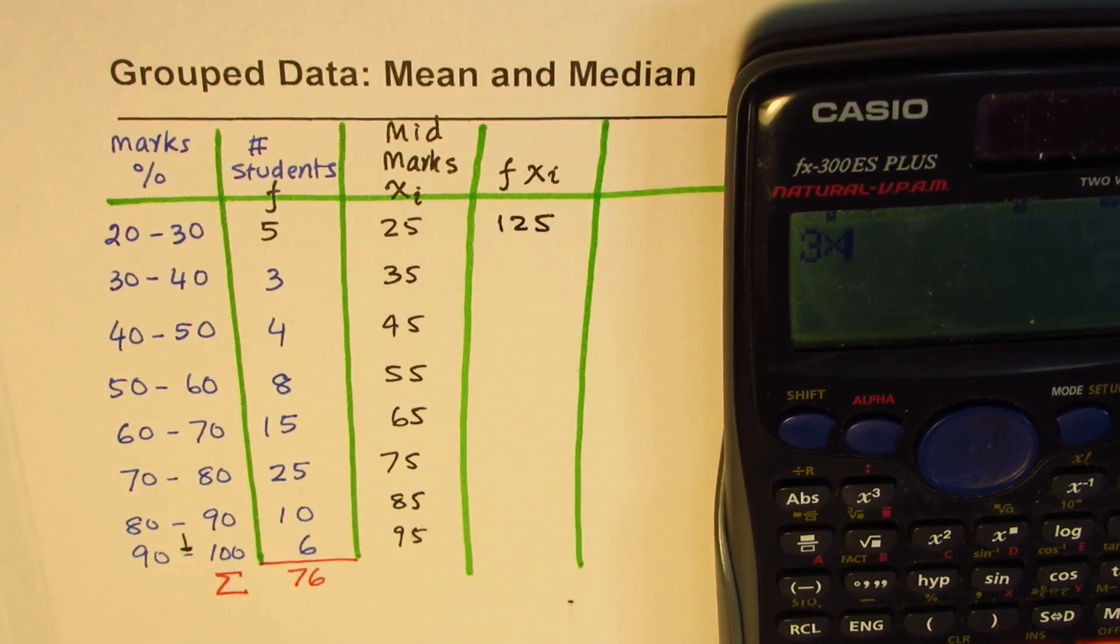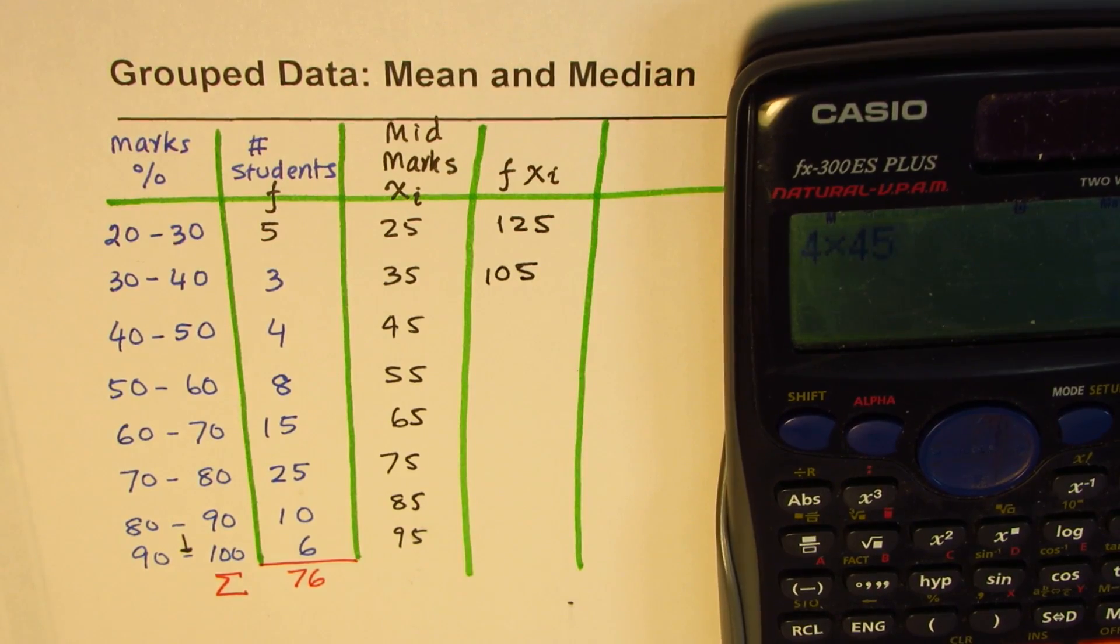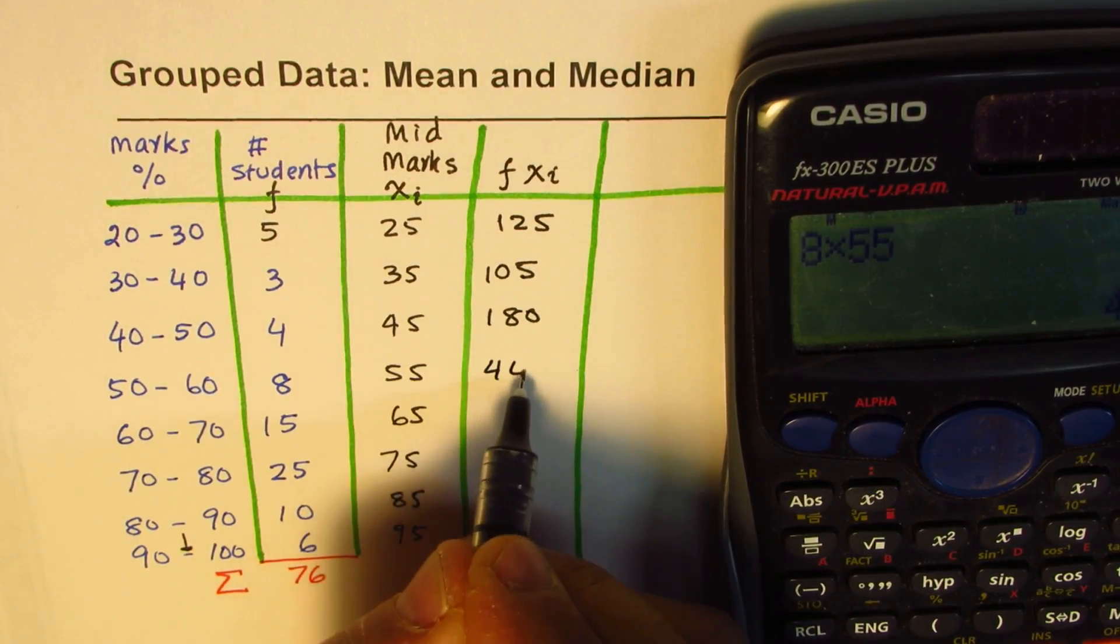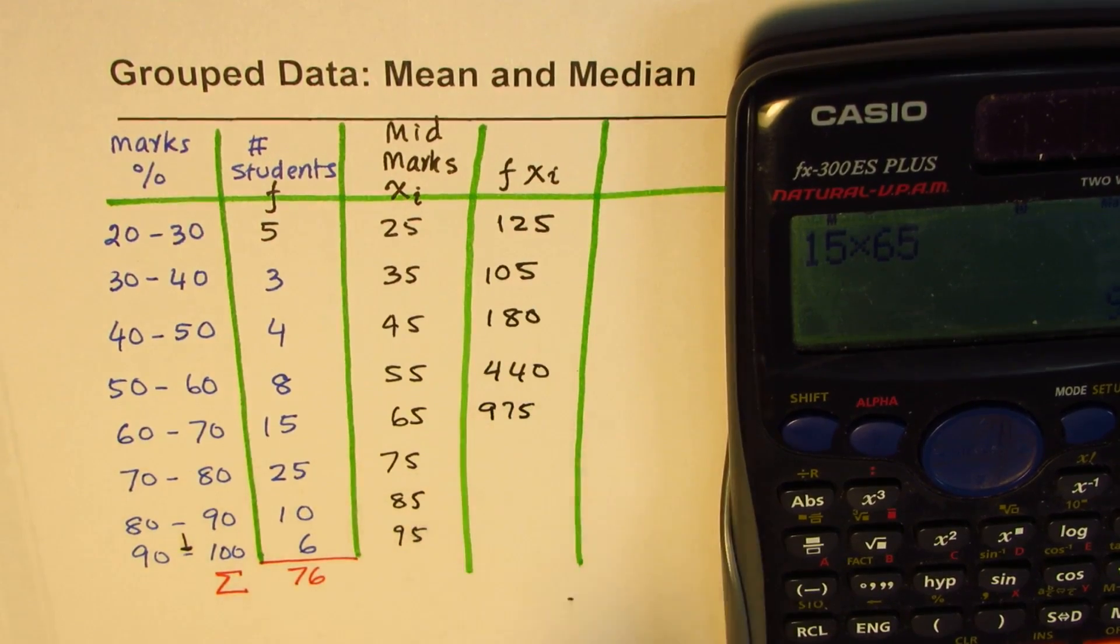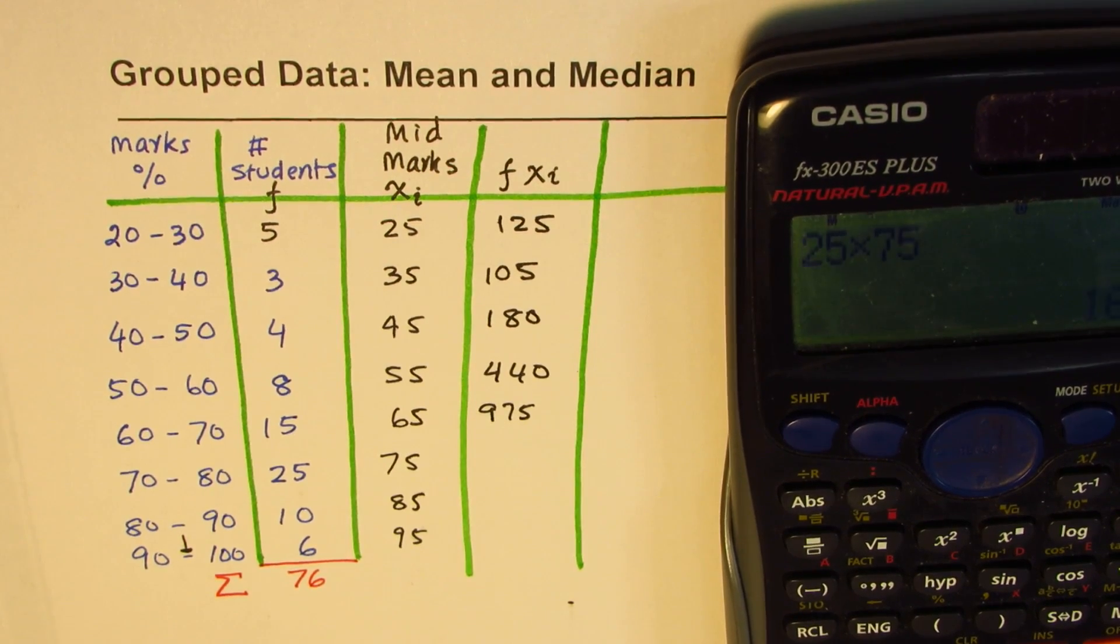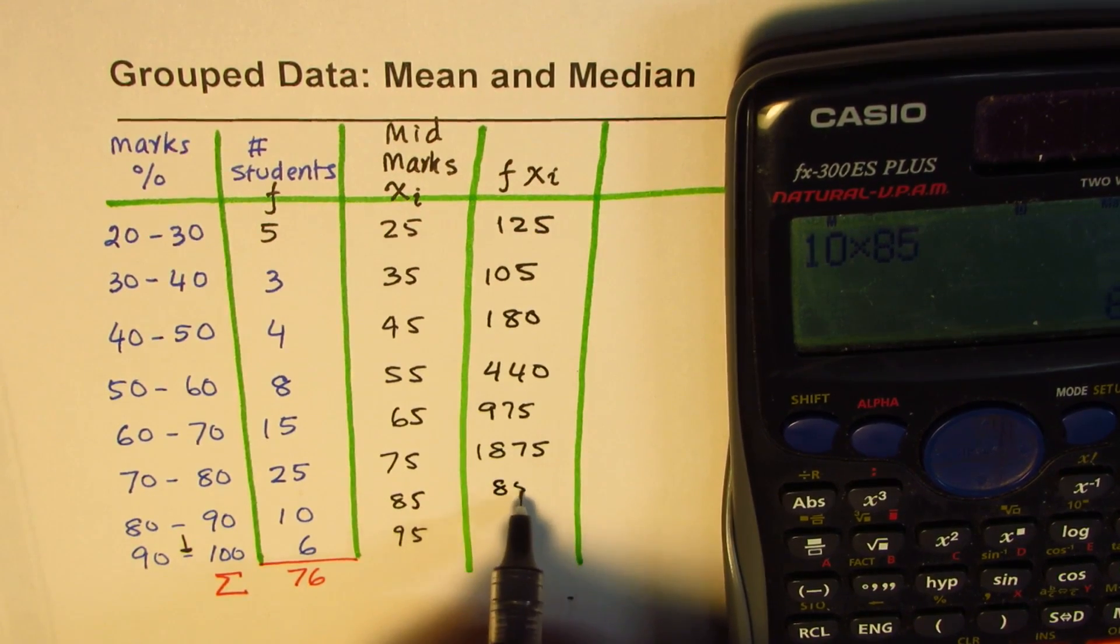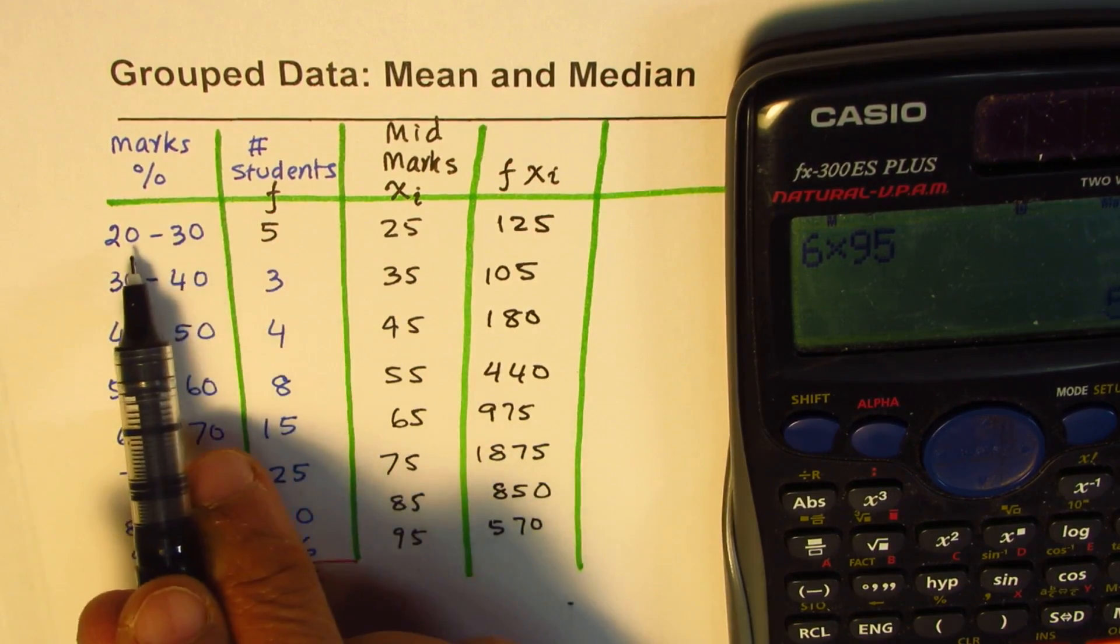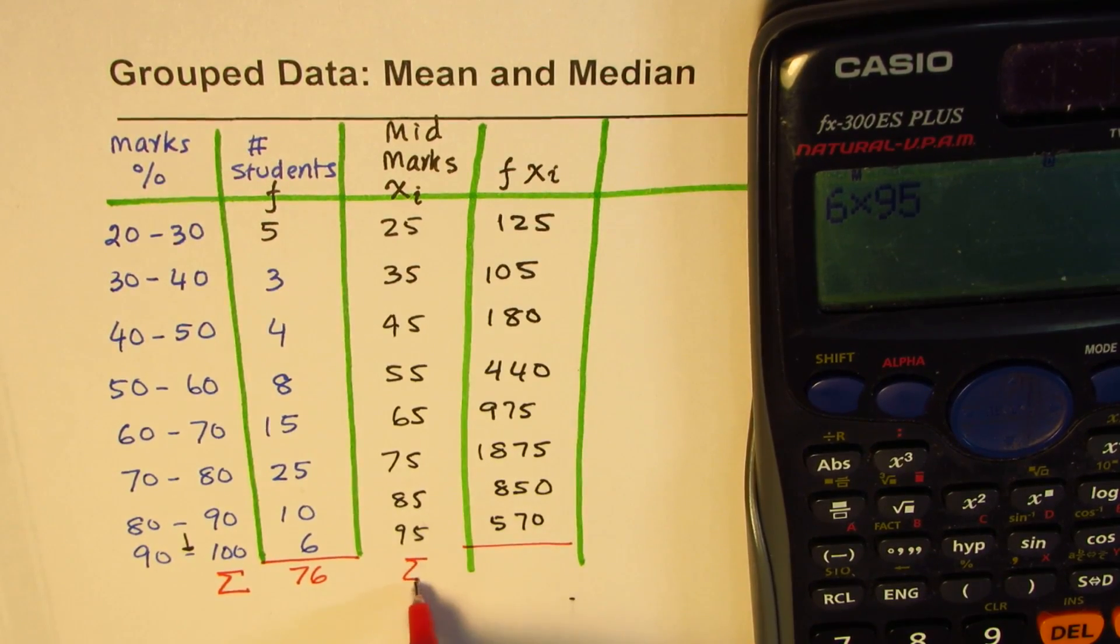It'll be 5 times 25 equals 125, 3 times 35 equals 105, 4 times 45 equals 180, 8 times 55 equals 440, 15 times 65 equals 975, 25 times 75 equals 1875, 10 times 85 equals 850.